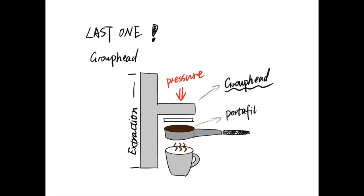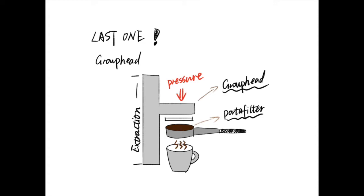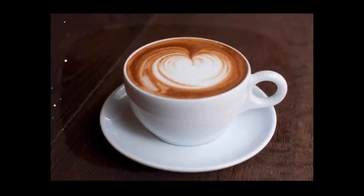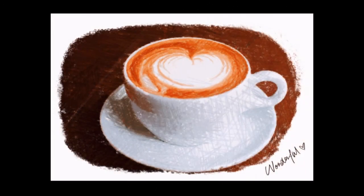The portafilter, or the group handle, is a detachable unit. Its basket can hold the tamped ground coffee. The portafilter forms a seal with the group head and directs pressurized hot water through the coffee puck. From here, you can have your shot of perfect espresso.